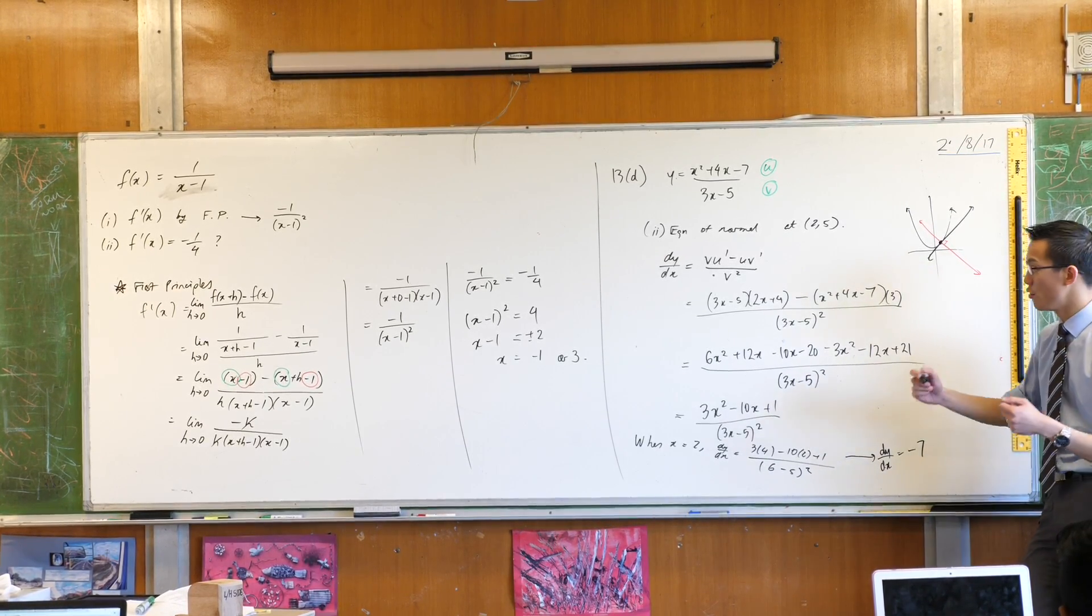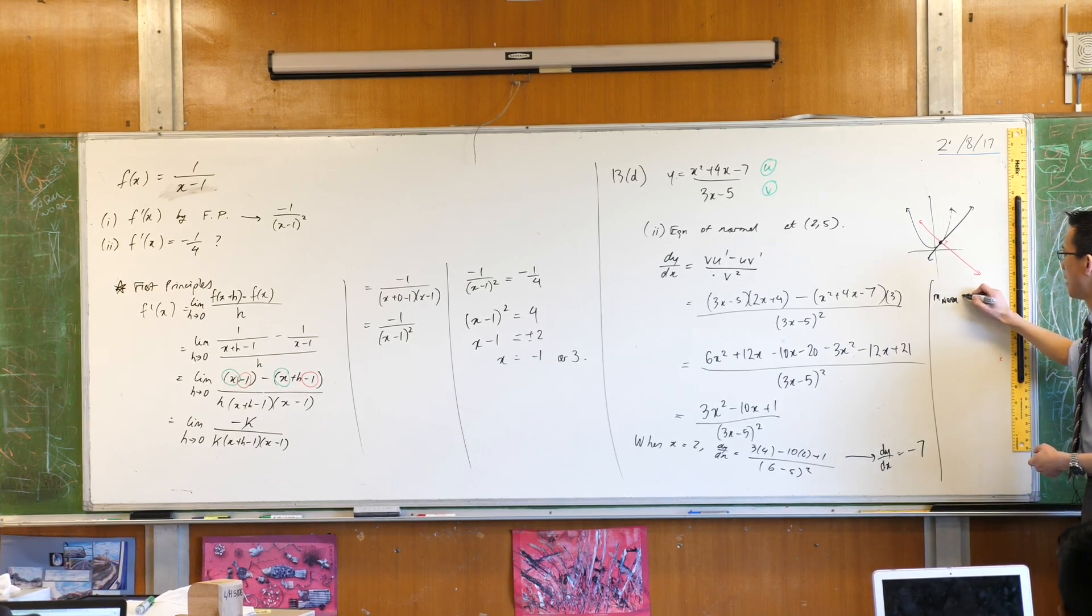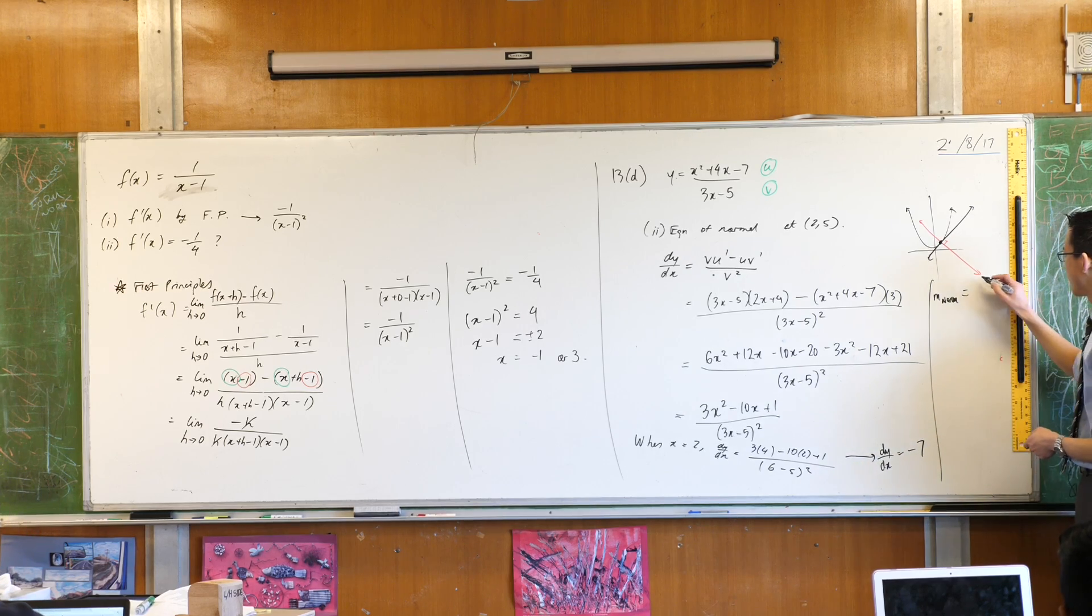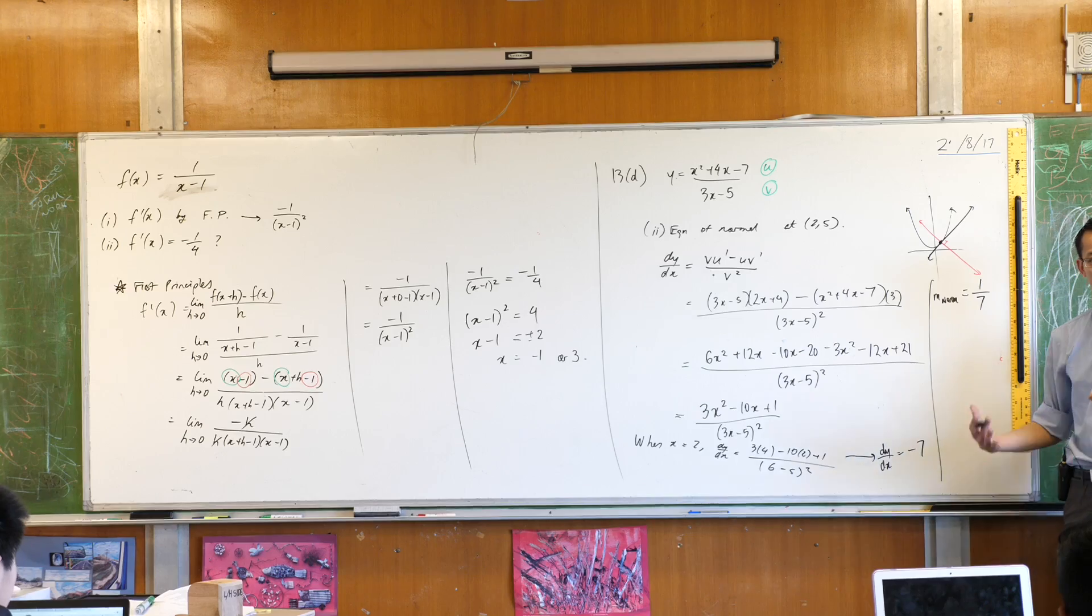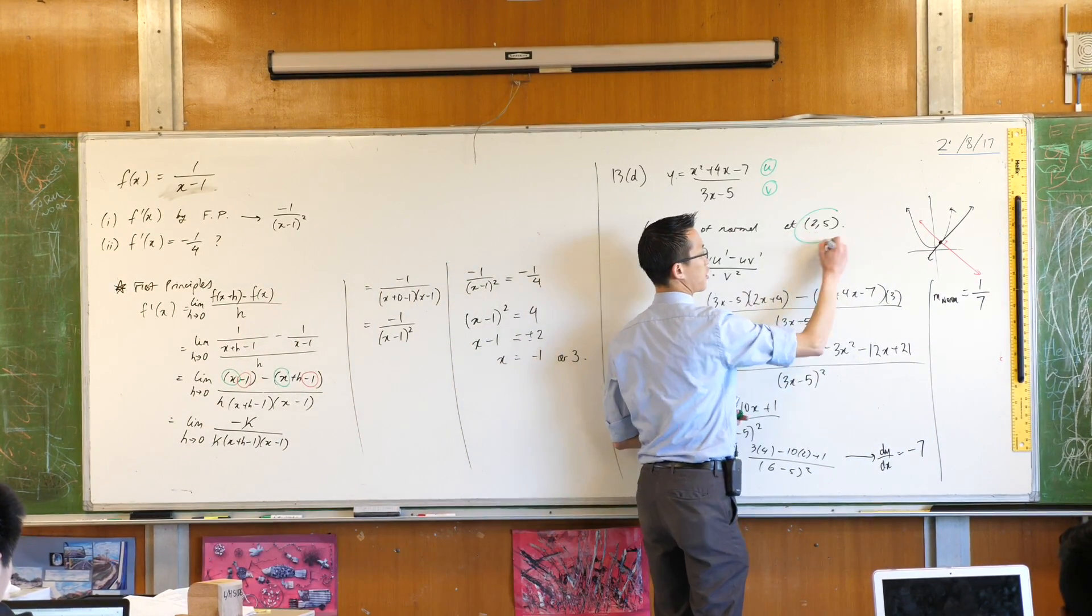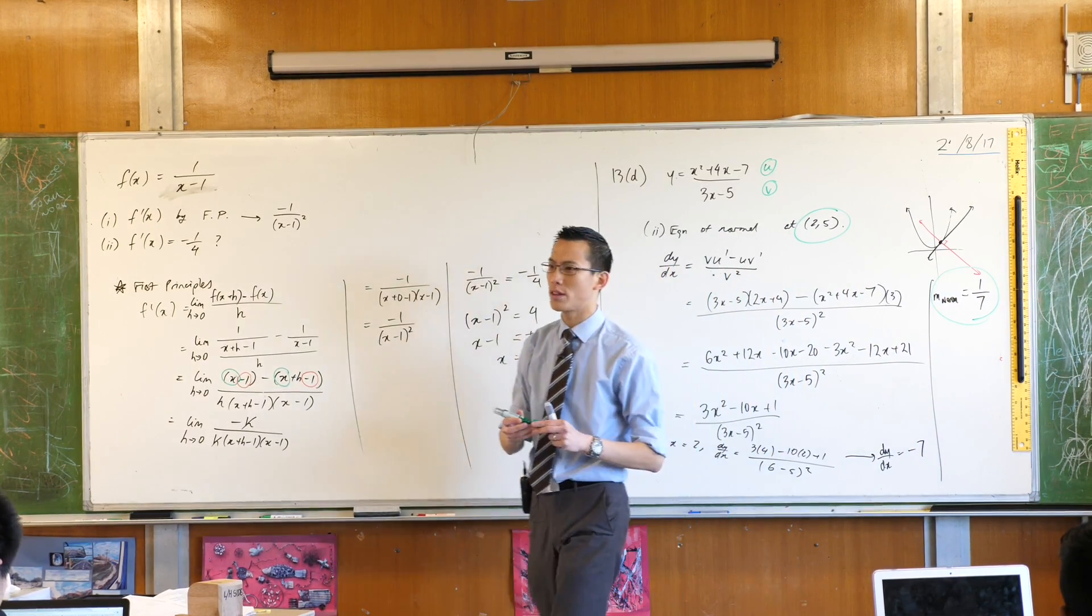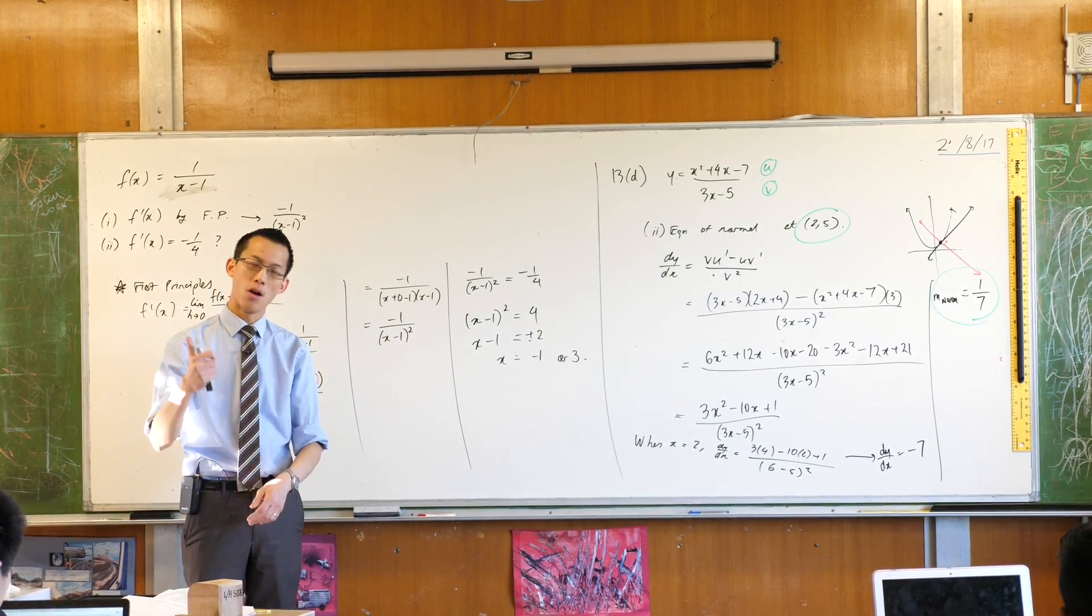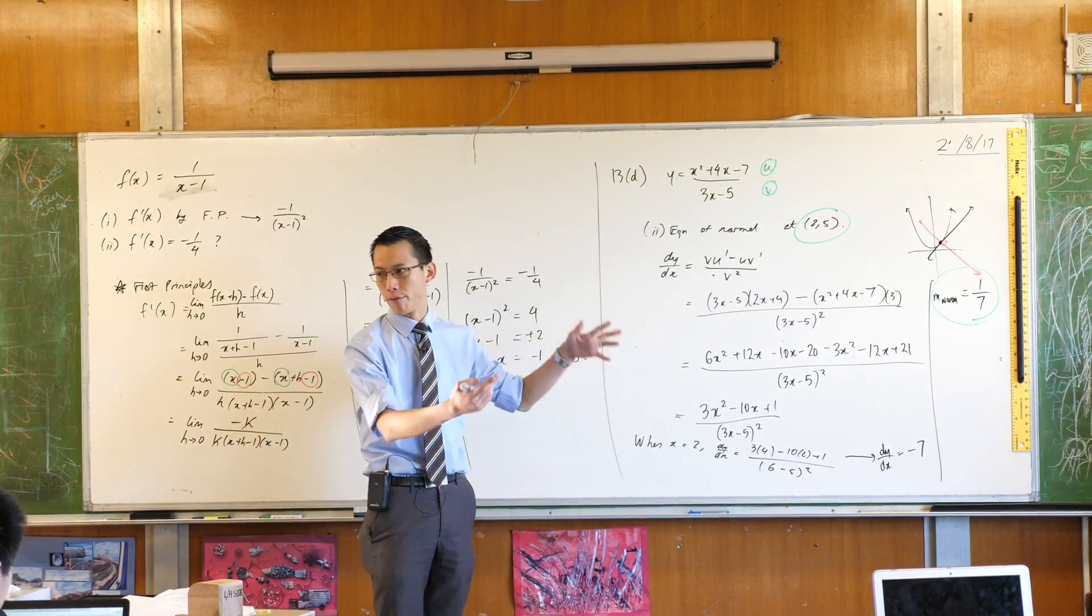So therefore the gradient of the normal and I would want to write this. I would say the gradient of the normal is going to be the negative reciprocal of this guy which is 1/7. There it is because that's already negative so this one's positive. And this is pretty much all the information I need because they already conveniently provided for me the coordinates. Now I know the gradient that I'm after so what will I do with these two together? Point-gradient form and I don't need to review that with you right? y minus y1 equals m outside of x minus x1 and then off you go.